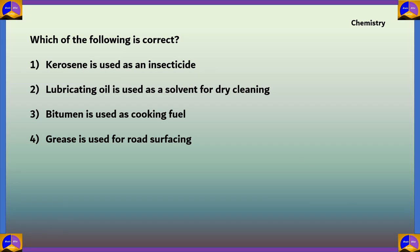The next question on chemistry: which of the following is correct? Option 1: kerosene is used as an insecticide. Option 2: lubricating oil is used as a solvent for dry cleaning. Option 3: bitumen is used as cooking fuel. Option 4: grease is used for road surfacing.